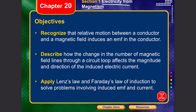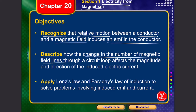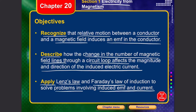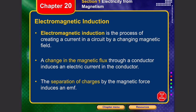After completing this section you should be able to recognize that relative motion between a conductor and a magnetic field induces an EMF in the conductor, describe the change in the number of magnetic field lines through a circuit loop and how it affects the magnitude and direction of the induced electric current, and apply Lenz's law and Faraday's law of induction to solve problems involving induced EMFs and current.